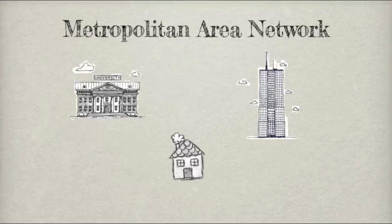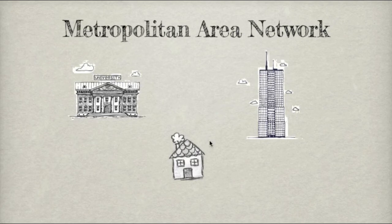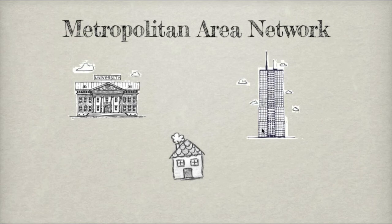If your house was connected to perhaps an office, a university, or some other buildings that were less than 30 miles away — generally that's the rule — then you would be using a metropolitan area network. So maybe you've got a computer in your home and your office is only five or ten miles away, and you've got a computer there — you could use the same network to share information.